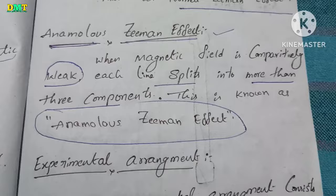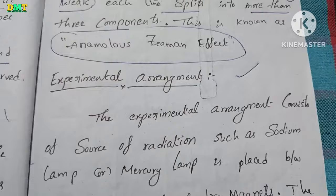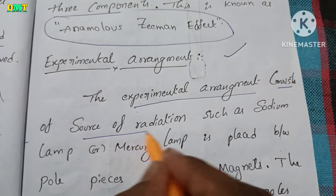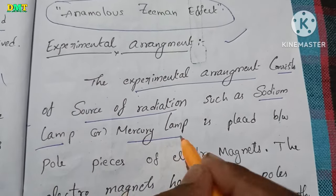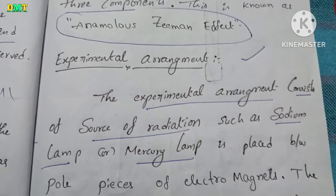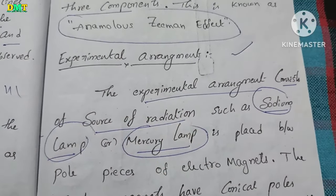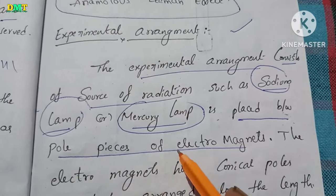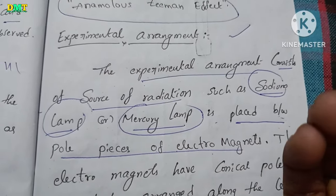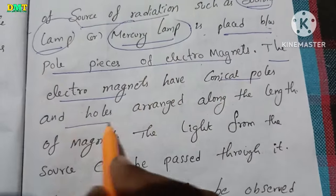Now let's do the experimental arrangement. The experimental arrangement consists of a source of radiation such as a sodium lamp or mercury lamp. It is placed between the pole pieces of electromagnets. The electromagnets have conical poles and holes.